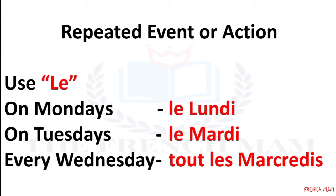We are talking about a repeated action or event on a particular day, like every week. You can also use 'every' followed by the relevant day of the week. In French, you need to use tous les followed by the relevant day. But this time it is plural. So to say 'every Wednesday' in French, you would say tous les mercredis. For every Monday: tous les lundis. Every Tuesday: tous les mardis. Every Sunday: tous les dimanches.